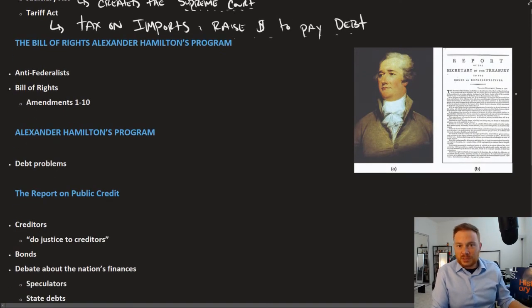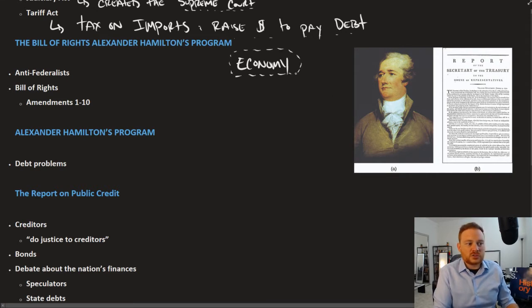The economy was the most dire problem right after the Constitution was created. It was a big reason why the Articles government was gotten rid of. It's going to be up to Alexander Hamilton, the Secretary of Treasury, to solve this economic problem.